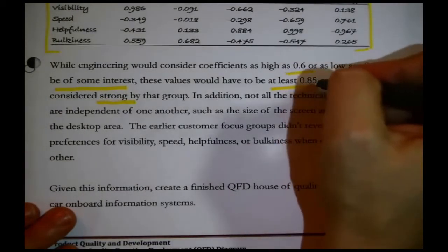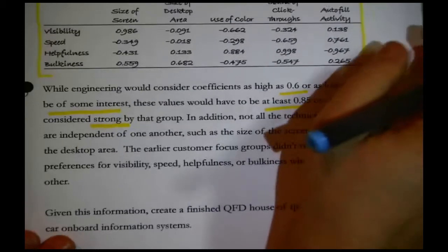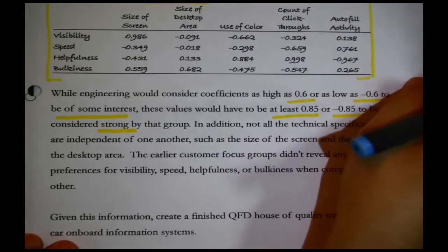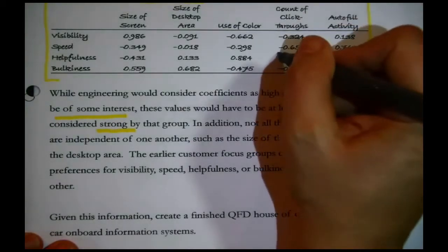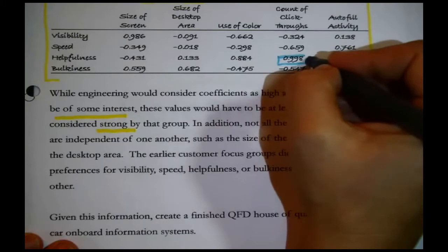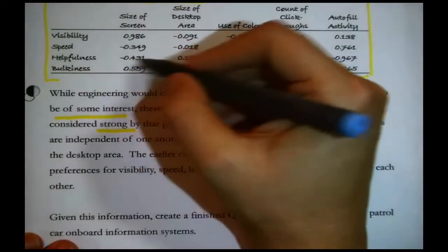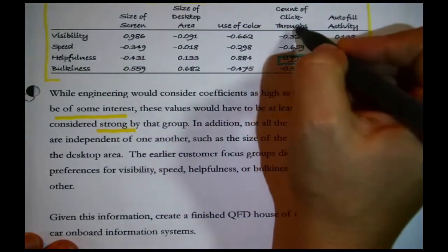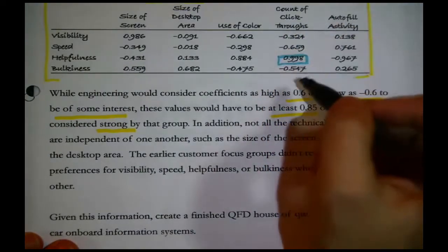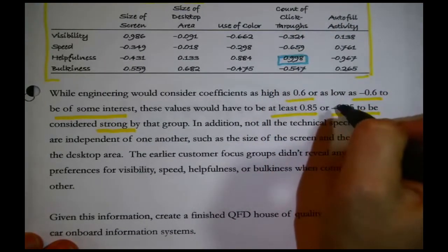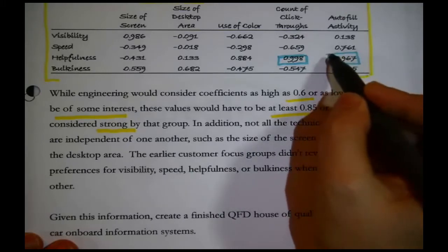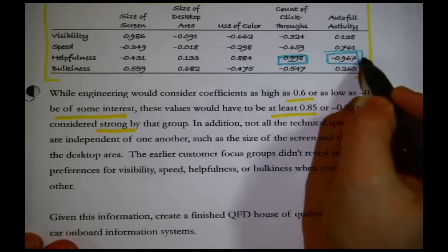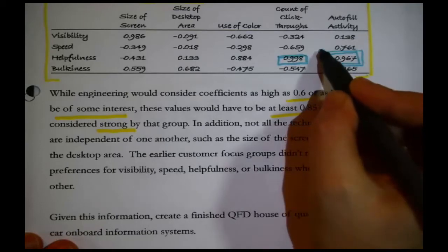Because they said that they felt strong at least 0.85 or negative 0.85. I'm looking at their data, and I'm curious where, there's one, you see 0.998 right here? What is that? It's the correlation between helpfulness and the count on the click-throughs. That's what they would consider a very strong correlation. Likewise, right here, here's a very strong negative correlation.